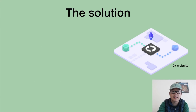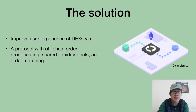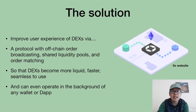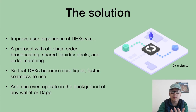ZeroX's solution is to improve the user experience of decentralized exchanges via a protocol with off-chain order broadcasting, shared liquidity pools, and order matching. This makes DEXs more liquid, faster, and seamless to use — and they can even operate in the background of any wallet or dApp. So the end user doesn't need to manually get tokens from exchanges and transfer them to a dApp to use it anymore.